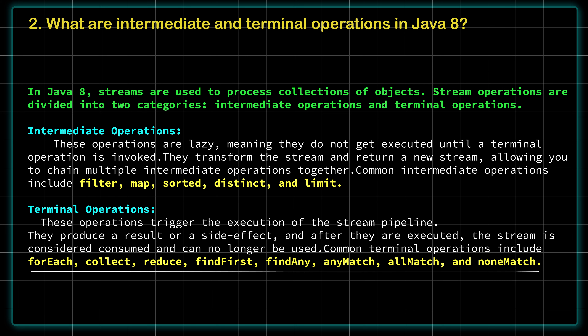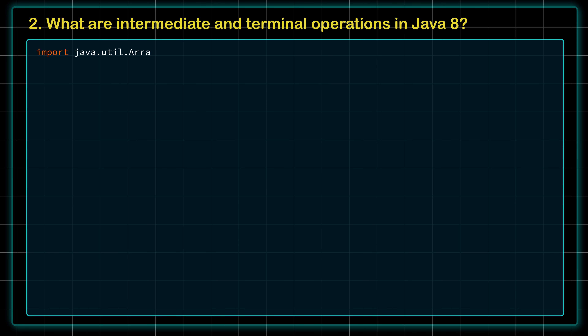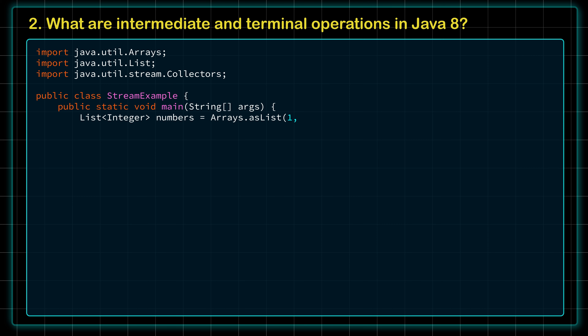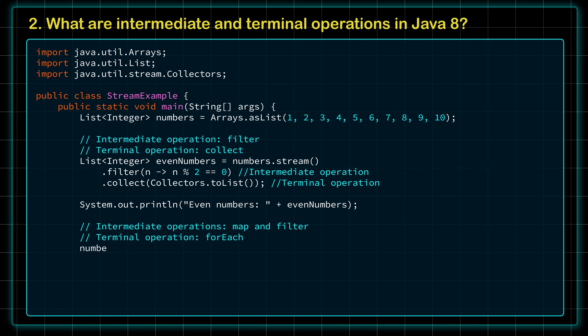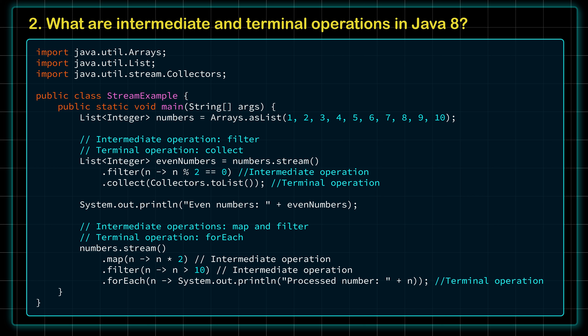Similarly, forEach, collect, reduce, findFirst, findAny, etc. are terminal operations. After applying terminal operations, the stream is considered consumed and can no longer be used. We can also demo this with a simple example. Here I have taken a list of numbers — filter is applied as an intermediate operation, then collect as a terminal operation. In the second example, map and filter are the intermediate operations and forEach is the terminal operation. I hope now we understand the differences between intermediate and terminal operations in Java 8.